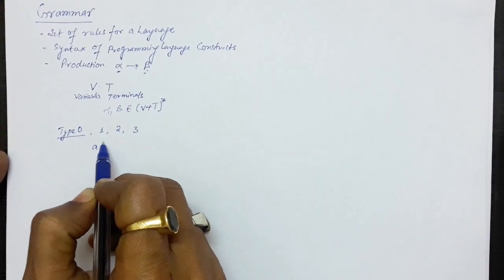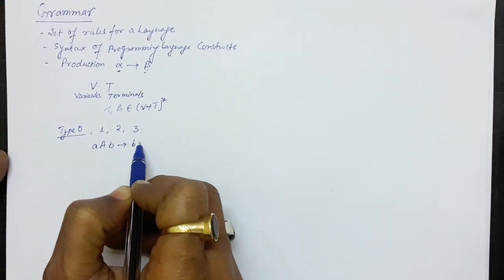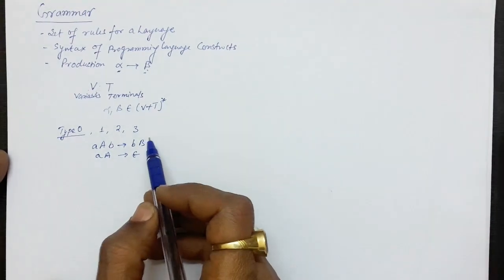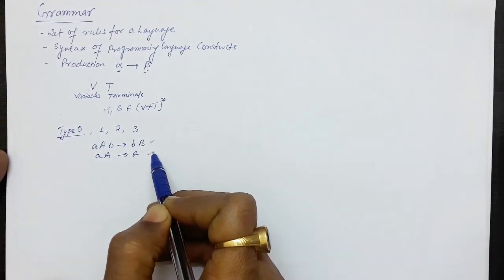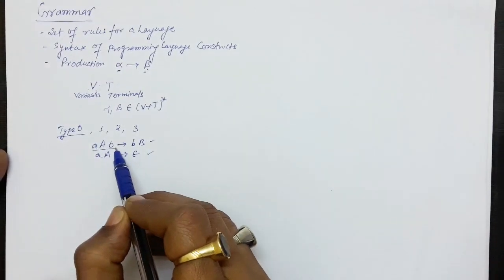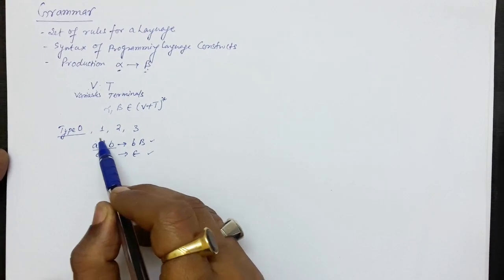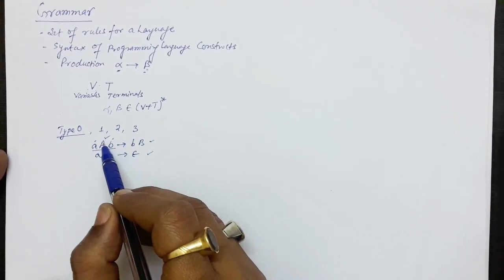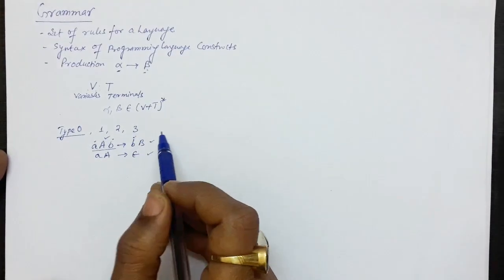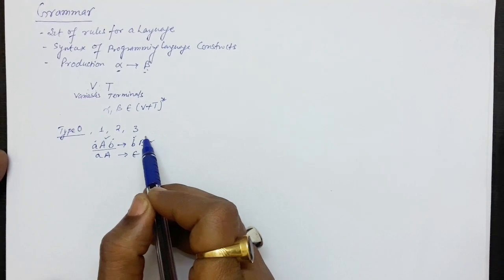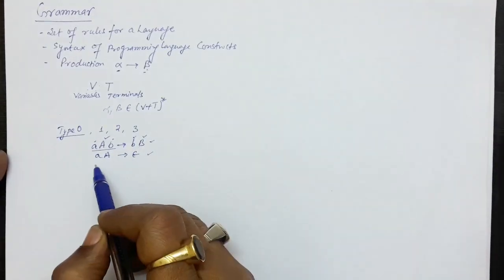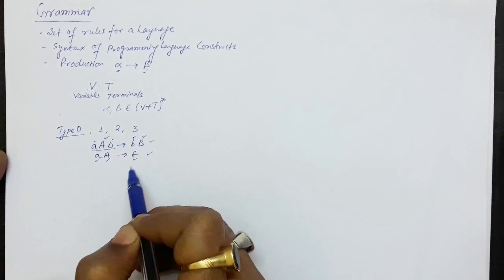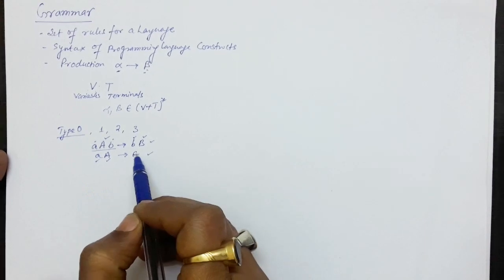Suppose there is a production of type AAB produces BB, and another production AA produces epsilon. In this grammar there are two productions. On the left hand side we have a combination of terminals and non-terminals. Here small a and small b are terminal symbols, and capital A is the non-terminal symbol, also known as a variable. On the right hand side, this is a combination of terminal b and non-terminal capital B. For the second production, capital A is the non-terminal and epsilon means nothing.